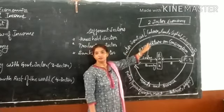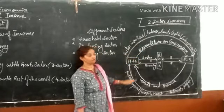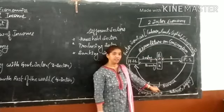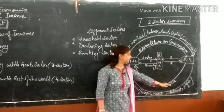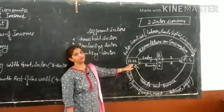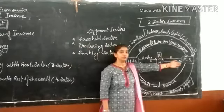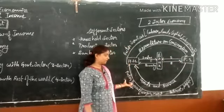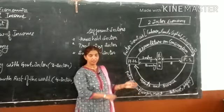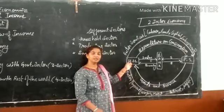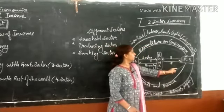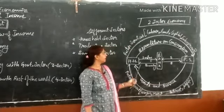In return for providing factor services, the household sector will receive factor payment. For labor it receives wages, for land and building it receives rent, for capital the household sector receives interest, and for entrepreneurship the household sector receives profit. So household sector provides factor services to the producing sector and receives factor payment in terms of wages, rent, interest, and profit — all of which are known as factor payment.